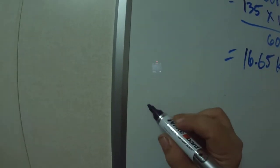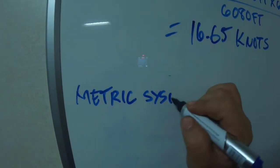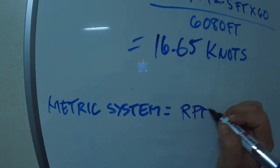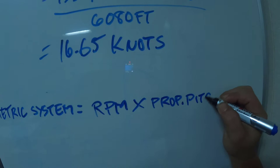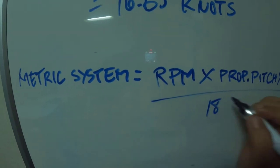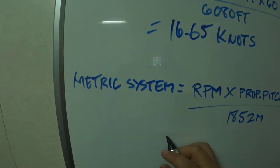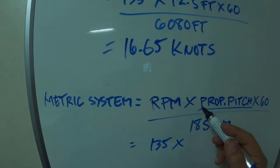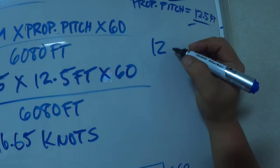Next is the metric system where we use 1852. The formula is the same: RPM times propeller pitch times 60 divided by 1852 meter. We'll use 135 again, but we need to convert the propeller pitch to meters.